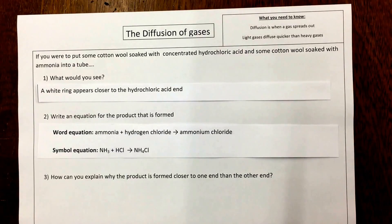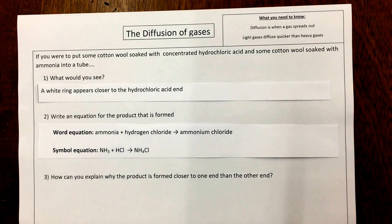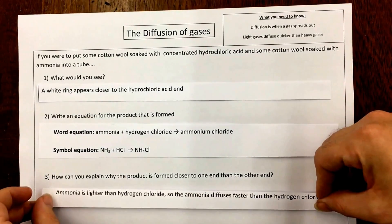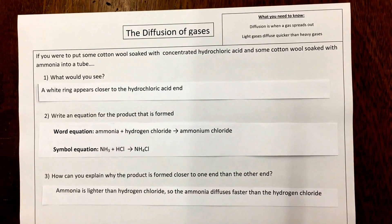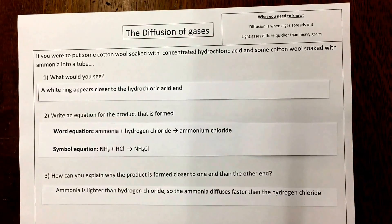And part 3 says how can you explain why the product is formed closer to one end than the other end. So because ammonia is lighter than hydrogen chloride, the ammonia diffuses faster than the hydrogen chloride.